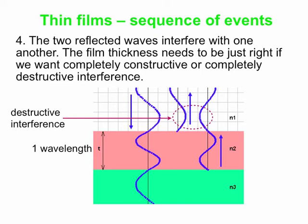Certain thicknesses would also produce completely constructive interference. Those are the basic steps in a typical scenario. If you change the order of the indices of refraction, you'd get different things happening at the various reflections. In this case, n2 is the largest index — bigger than n3 and n1 — but if you change that, you'd get something different.